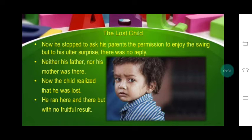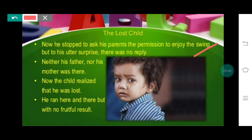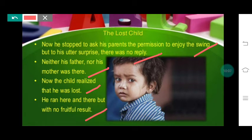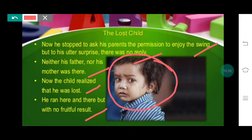He stopped to ask his parents for permission to enjoy the roundabout swing, but there was no reply. Neither his father nor his mother was there. The child now realized that he was lost. He ran here and there but with no fruitful result. He even went near the shrine — the temple because of which the fair was being held — but he could not find his father and mother. He started to cry, desperate, sad, and depressed, just wanting to meet his parents.